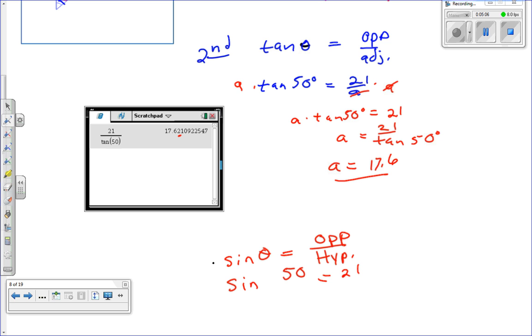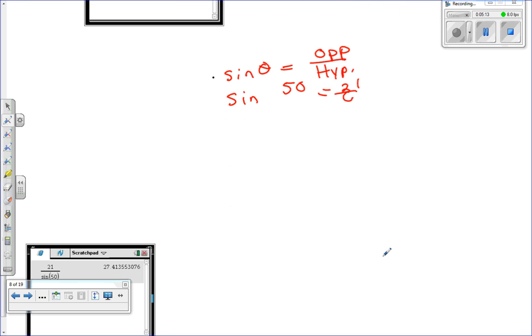So 21 over C, which is what we're trying to find. And just like we did before, we're going to multiply both sides by C. So let me get a different color here. Multiply this guy by C. Multiply this guy by C. These guys cancel. Left with C times the sine of 50 degrees is equal to 21. Divide both sides by sine of 50.